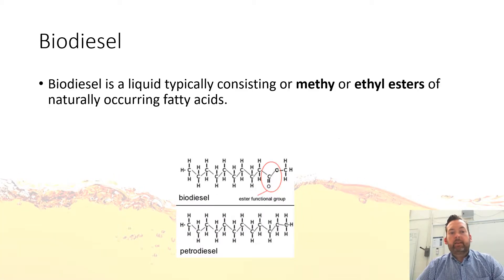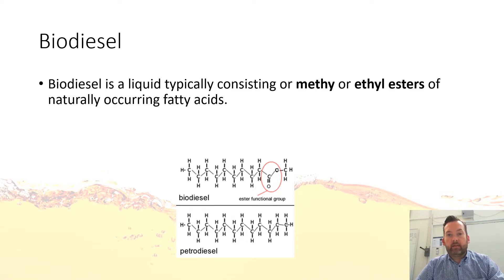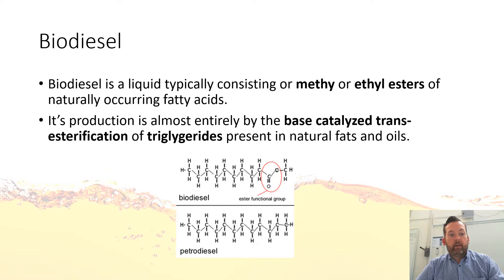Biodiesel is a liquid typically consisting of methyl or ethyl esters of naturally occurring fatty acids. Down in the diagram there are a couple of comparison pictures between traditional biodiesel and petrodiesel, which is what we would normally get from the fuel bowser at a petrol station for a diesel car. Its production is almost entirely done by base-catalyzed transesterification of triglycerides, which are fats present in natural fats or oils.